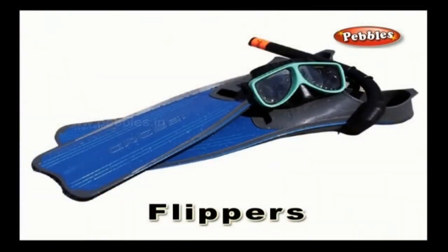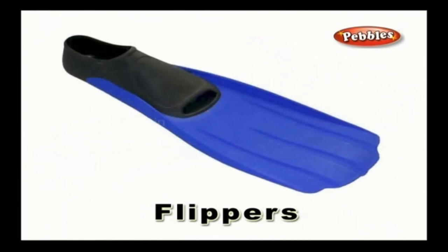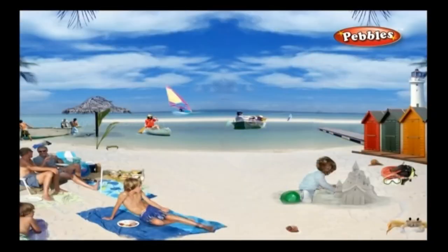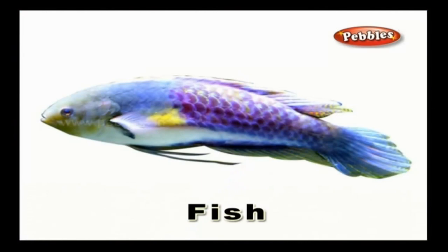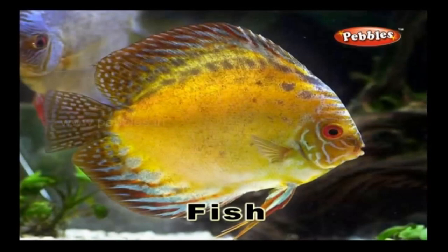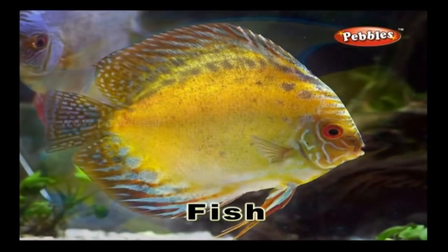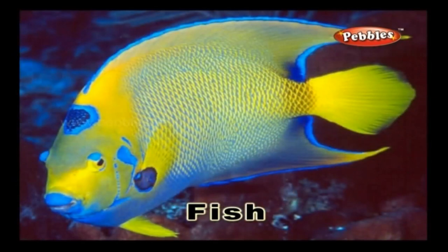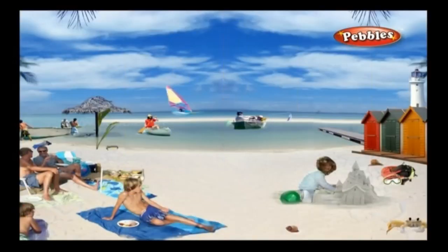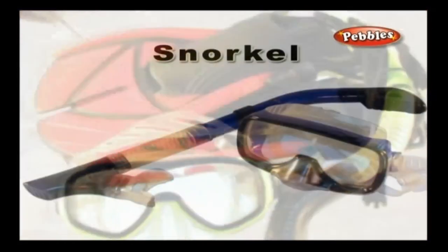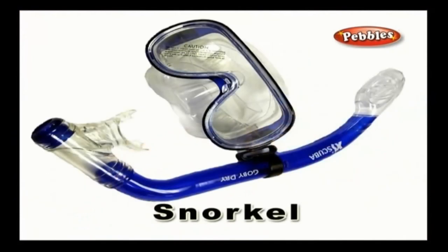Fish Flippers: A flat rubber covering for the foot that is used in swimming and diving. Fish: Fish are aquatic creatures seen in abundance in the sea and in fresh water. They have gills to breathe. Humans cook and eat them for food. They are rich in protein. Snorkel: Snorkelling refers to the swimming practice done at the surface of a body of water while equipped with a diving mask.